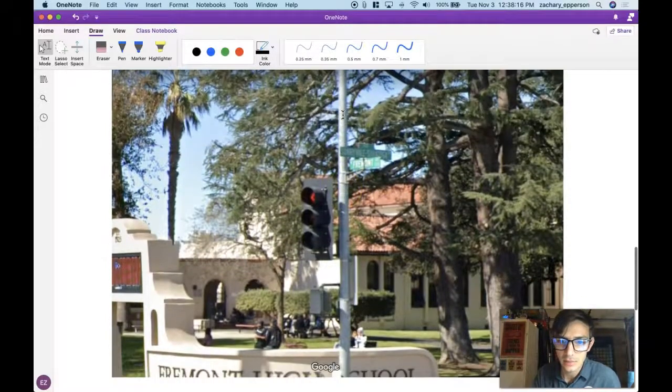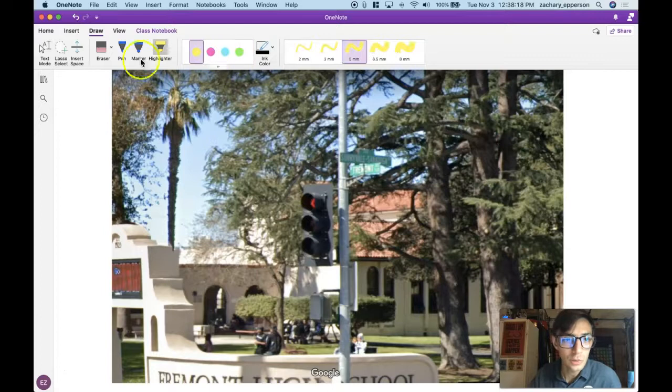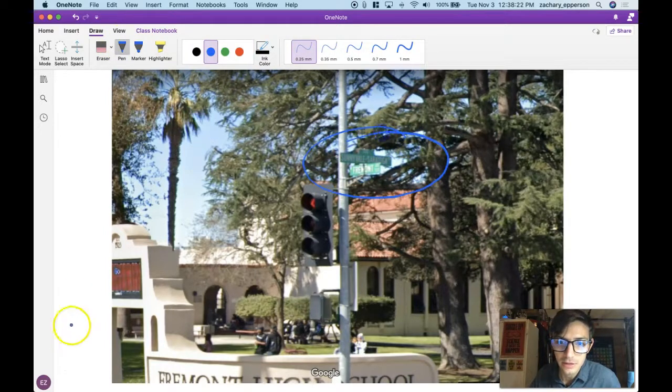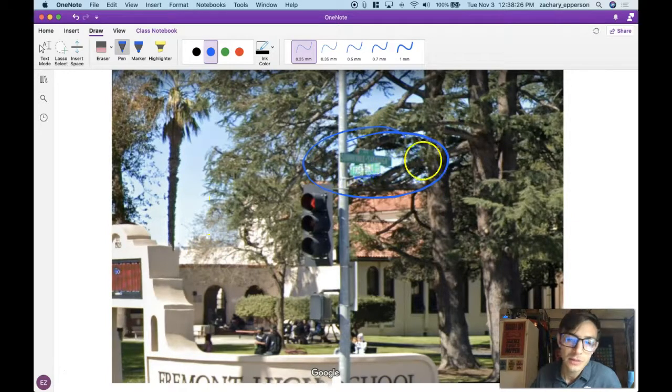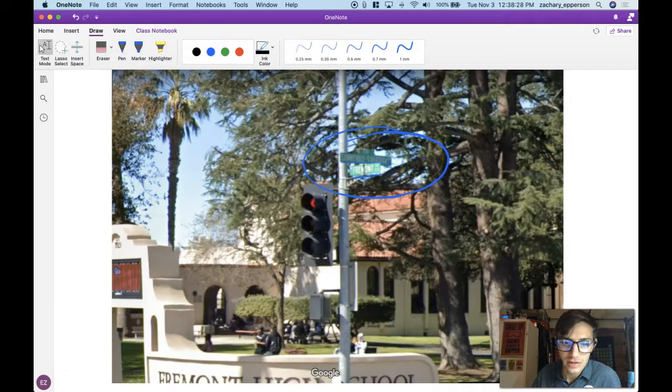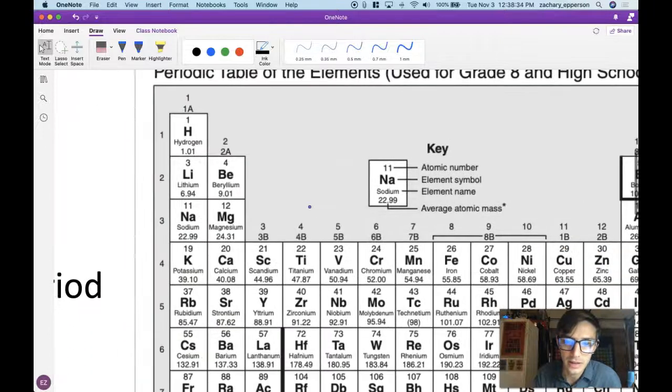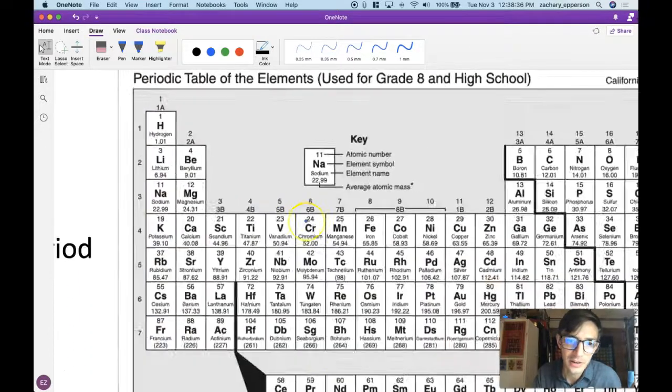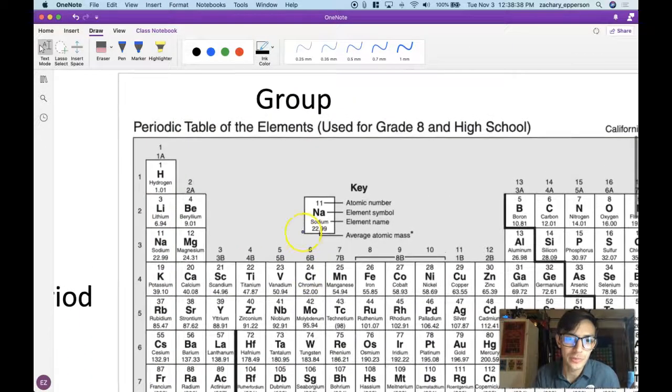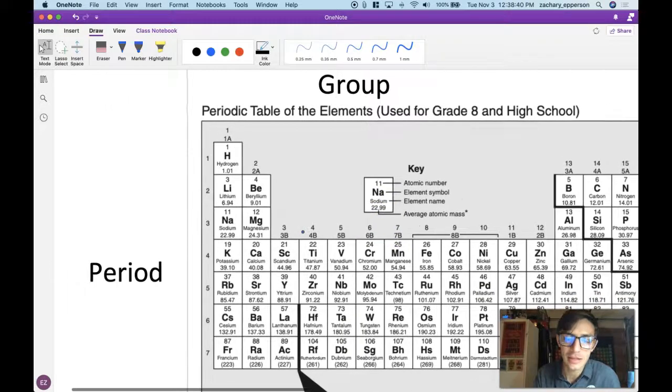If I was to ask somebody to give me direction to the school, the school is at the corner of Sunnyvale, Saratoga, and Fremont Avenue. So that's the cross street of Fremont High. Where's the cross street for, or the coordinates for a particular element? We'll learn how to do that by using these two terms, groups and periods.